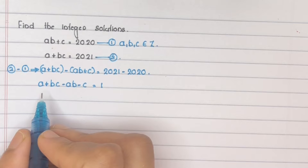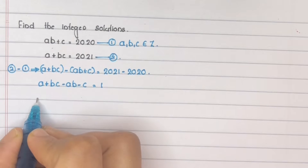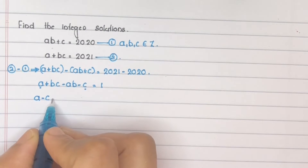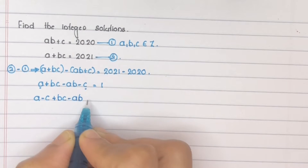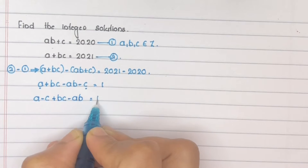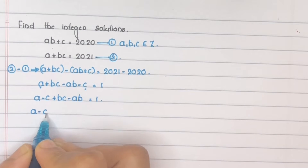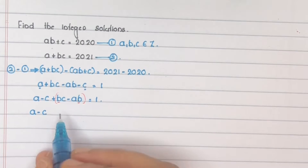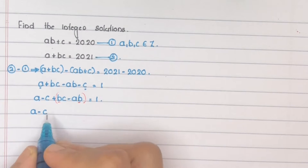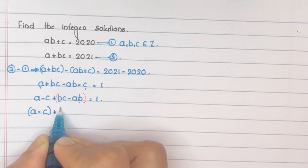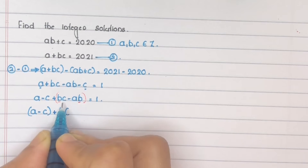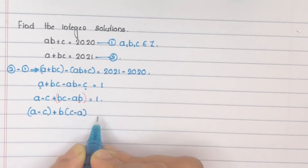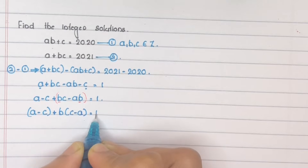Arrange the left-hand side and take common terms outside. We get A minus C plus BC minus AB equals 1. In BC minus AB, B is common, so take it out: A minus C plus B into (C minus A) equals 1.